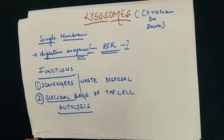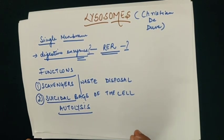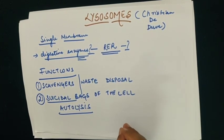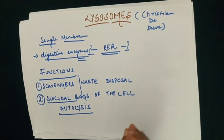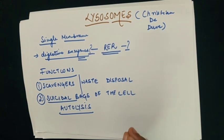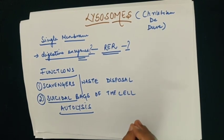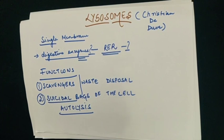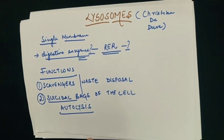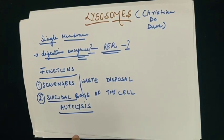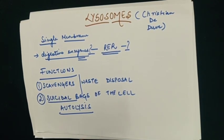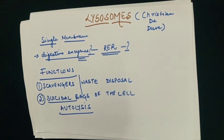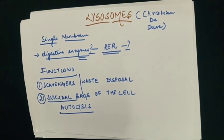This is what we covered in this session. We dealt with three topics: mitochondria, plastids and lysosomes. I hope you will be revising these topics and making notes from your reference book and NCERT as well. Thank you.